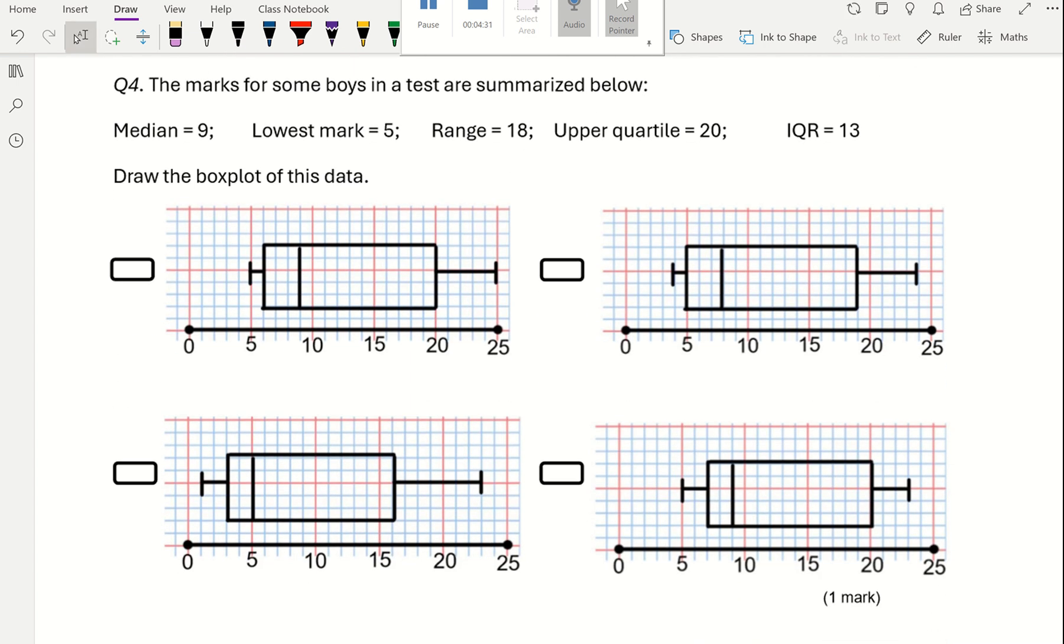Question 4 says the marks for some boys in a test are summarized below. The median is 9. Now the median is this line here, so that is a contender. This is not because this is 8, so that's out. This one, the median here is 5, so that's out. The median here is 9, so that's still a contender.